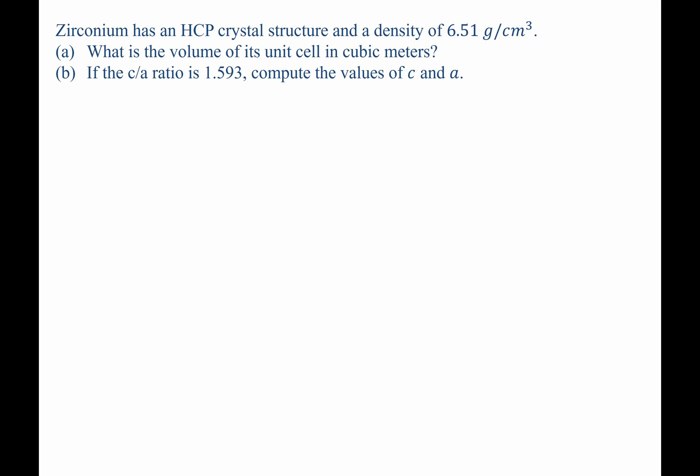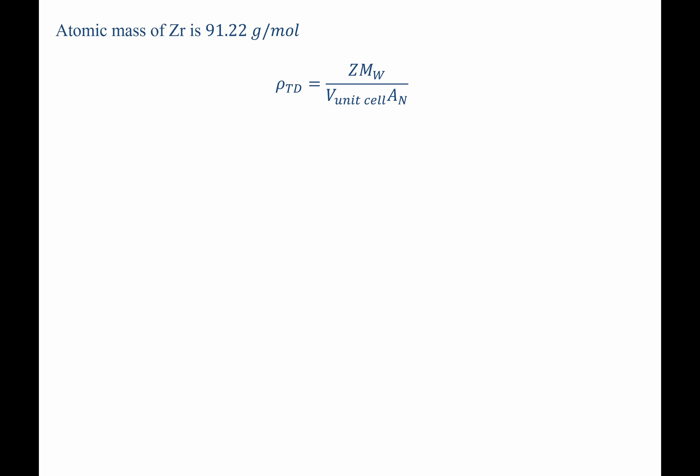And for Part B, if we were given a c over a ratio for this material, they ask us to solve for the specific values of both c and a. So for Part A, we can determine the volume of the unit cell because we already know the atomic mass of the zirconium, we know Avogadro's number, we're given the density. So the only thing we need to determine in order to find out the volume of the unit cell is z.